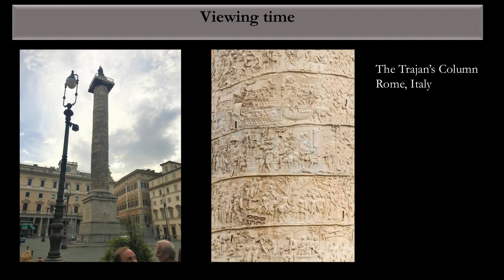Another example of viewing time: the Trajan Column in Rome tells the history of a campaign. Looking at the images around it, it tells a story, and it's going to take you a long time to walk around the column and go up and down to follow the narrative. These design elements can apply to work made thousands of years ago all the way to the Neolithic period, or to something made this morning — and you can incorporate them into your own artwork.